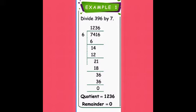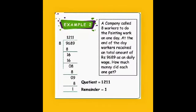Example 2: 9689 ÷ 8. In 9, how many 8s? One — 1 × 8 = 8. Subtract: 9 − 8 = 1. Take down the 6 — now we have 16. In 16, how many 8s? Two — 2 × 8 = 16. Remainder 0. Take down the 8. In 8, one 8 — 1 × 8 = 8. Subtract: remainder 1. Now take down the 9. This is a division with remainder sum.